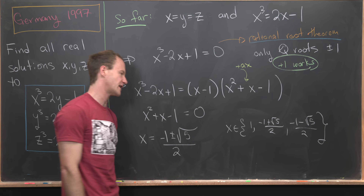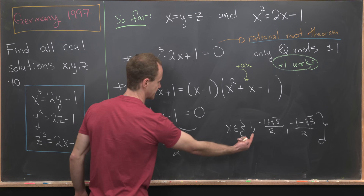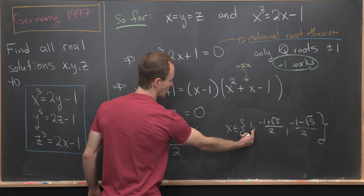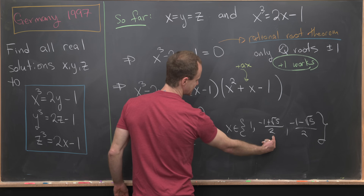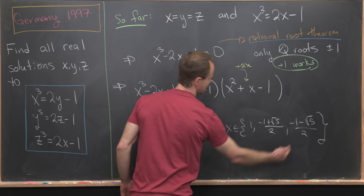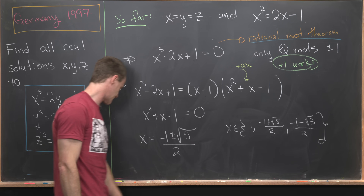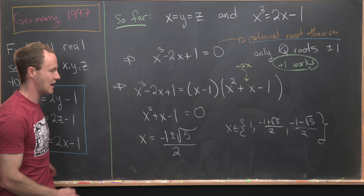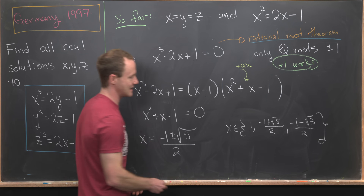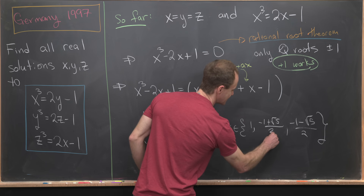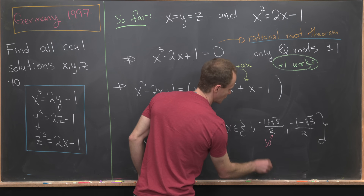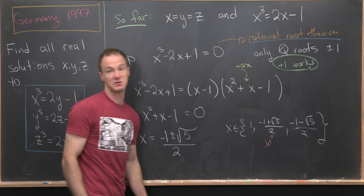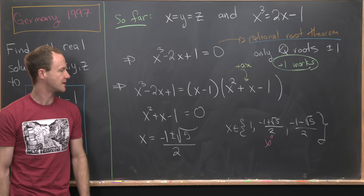Since y and z must equal x, that gives us three total solutions: (1, 1, 1), ((-1+√5)/2, (-1+√5)/2, (-1+√5)/2), and ((-1-√5)/2, (-1-√5)/2, (-1-√5)/2). It's worth pointing out that (-1+√5)/2 is the golden ratio, which is a pretty nice appearance here. Okay, that's a good place to stop.